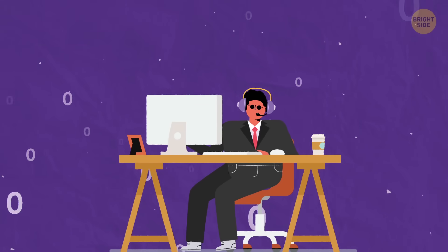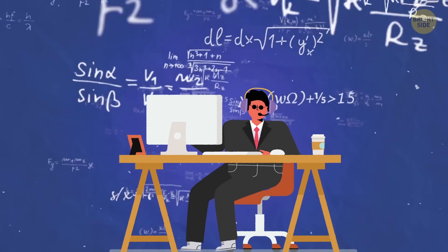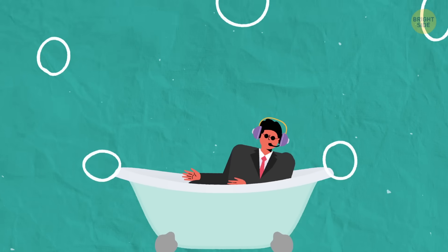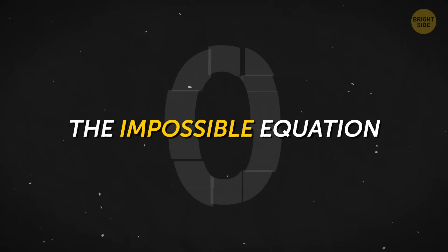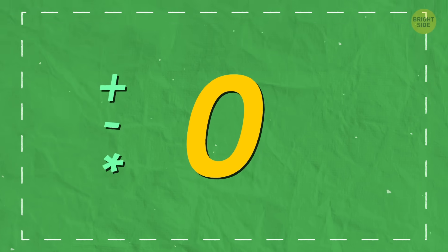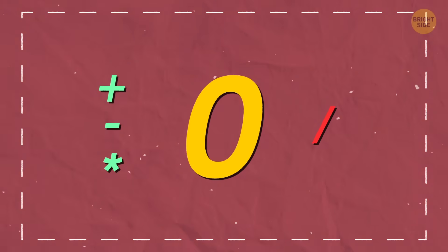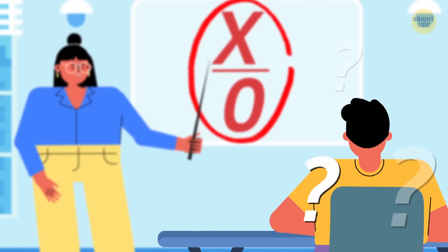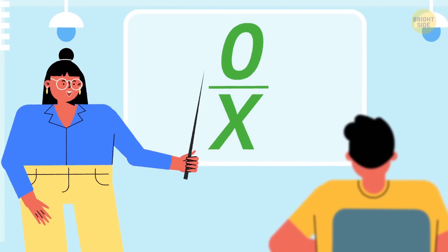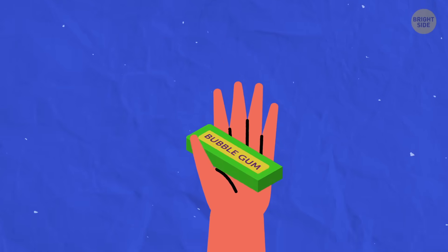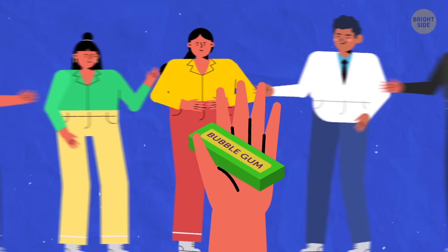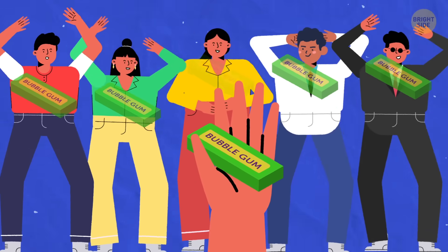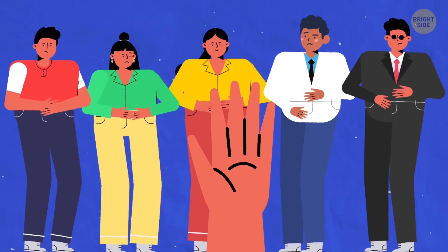To understand what I'm talking about, you need to immerse yourself in mathematics — like in a hot tub of math. The impossible equation: you can add zero, subtract it, and multiply by it, but you cannot divide by zero. You might remember your math teacher stressing that point, but did you ever wonder why? It works the other way around — you can divide zero by another number. For example, you can have zero pieces of gum and your five friends each ask you for a piece. That's zero divided by five, which equals zero. Everybody gets no piece of gum because there was none from the start.